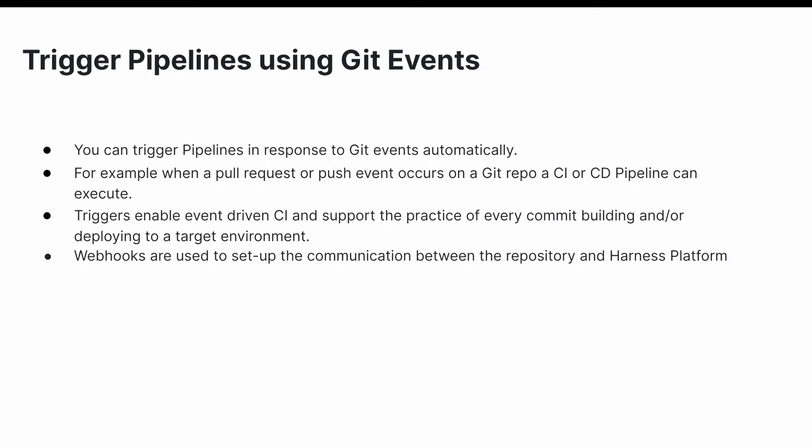You can trigger when there is a change in a specific file or pull request, or based on a specific artifact tag convention. You also have source and target branch conditions — the source and target branches of the Git merge that must be matched during the trigger. These are available depending on the type of event selected.